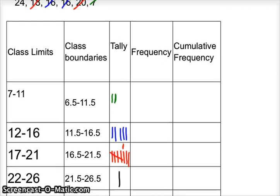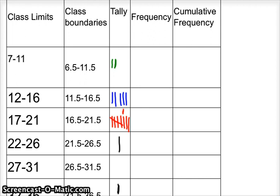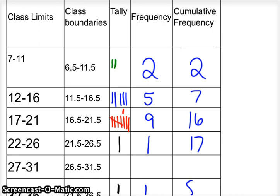The next thing is we'll go ahead and tally our frequency and convert those to numbers. Our frequency looks like we've got 2 between 6.5 and 11.5, and that accumulates to 2. We've got 5 of them here, so now we've got 7. We've got 5, 6, 7, 8, 9 of them here, so now we're up to 16. We've got 1 here, so we're up to 17, and 1 here, we're up to 18. I think I might be missing one, so I'm going to pause and go check.